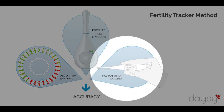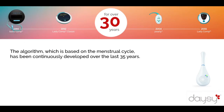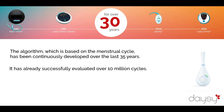Third, the avoidance of human input and interpretation errors through the combination of hardware and software in one device. The algorithm, which is based on the menstrual cycle, has been continuously developed over the last 35 years. It has already successfully evaluated over 10 million cycles.